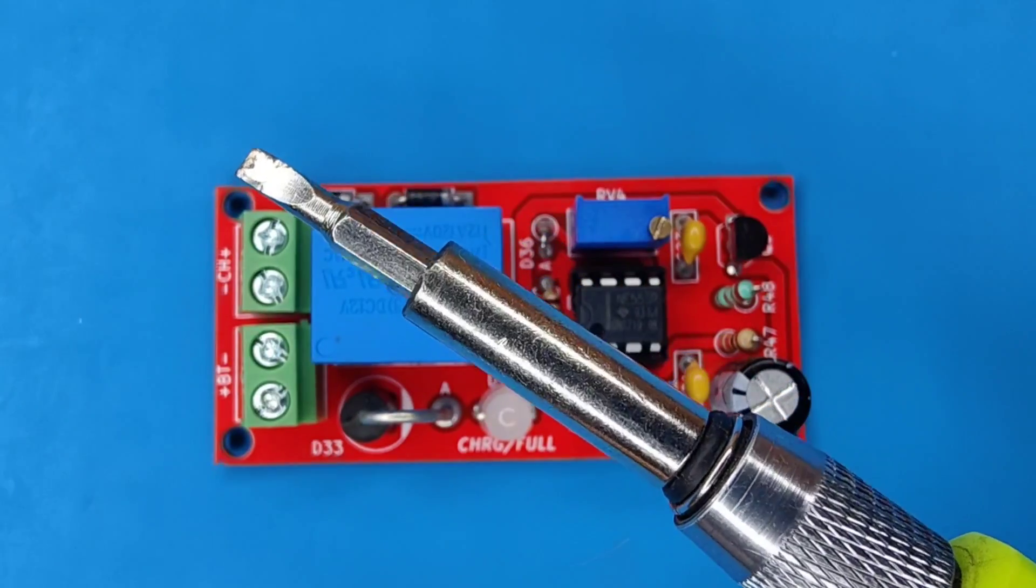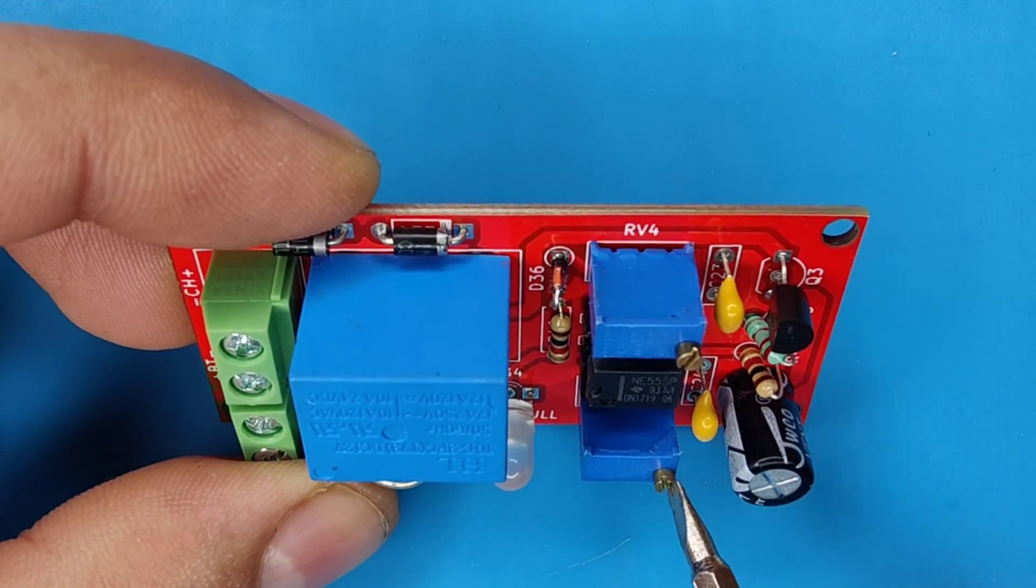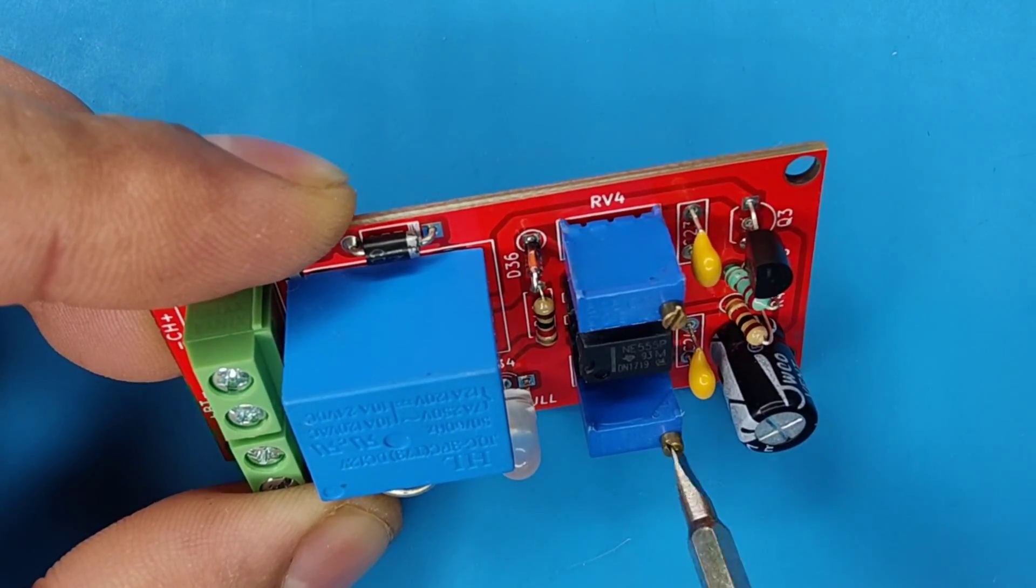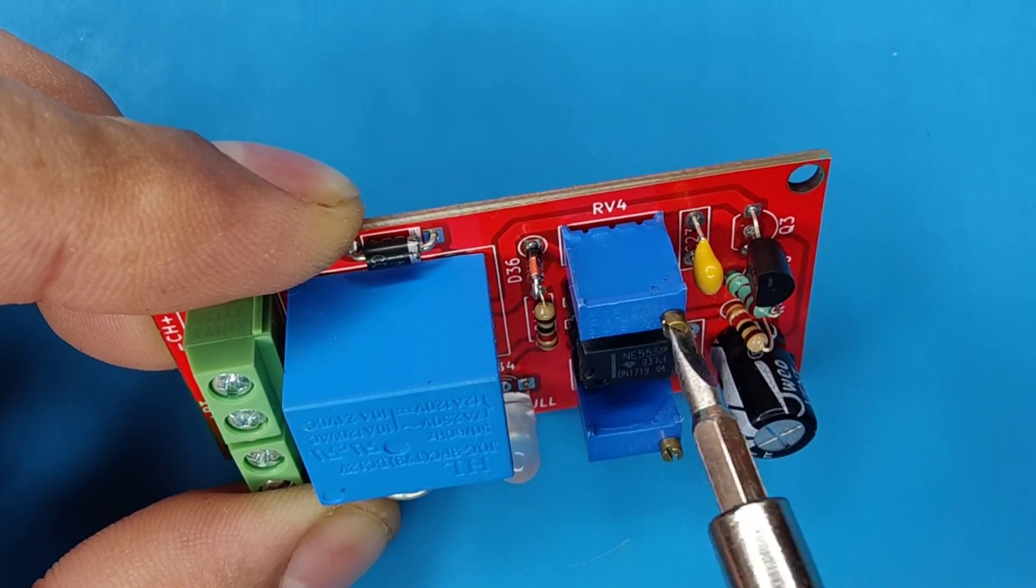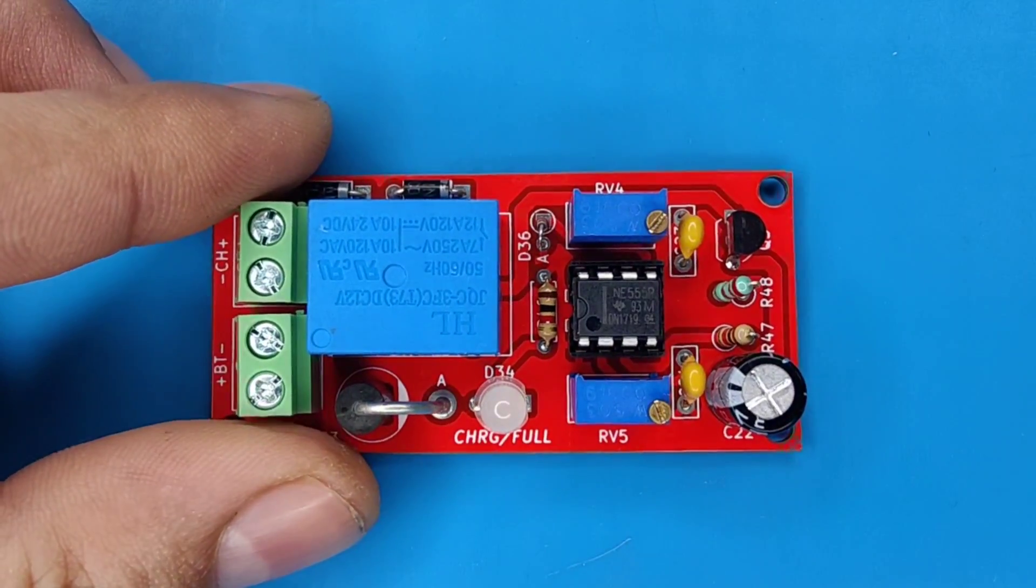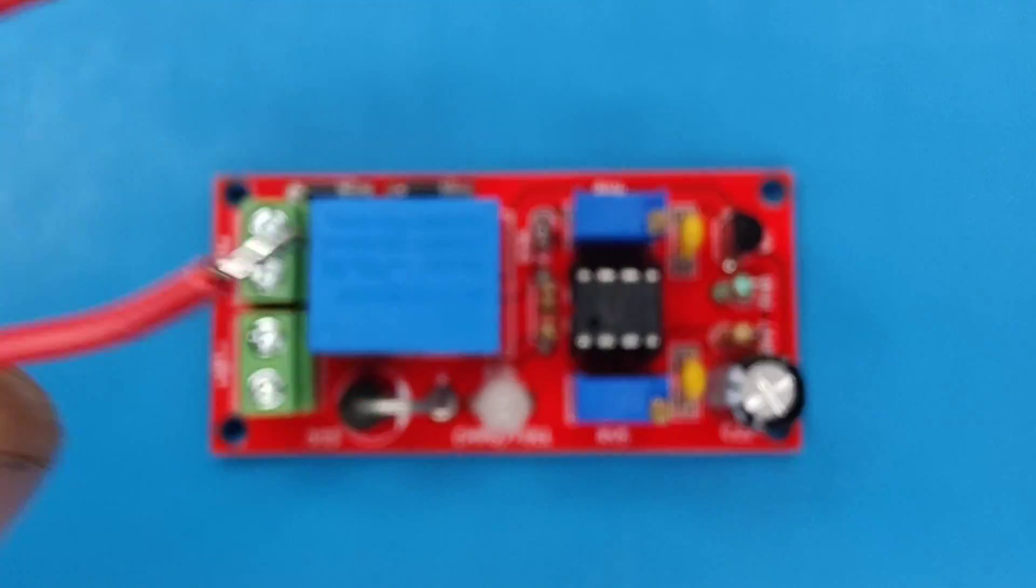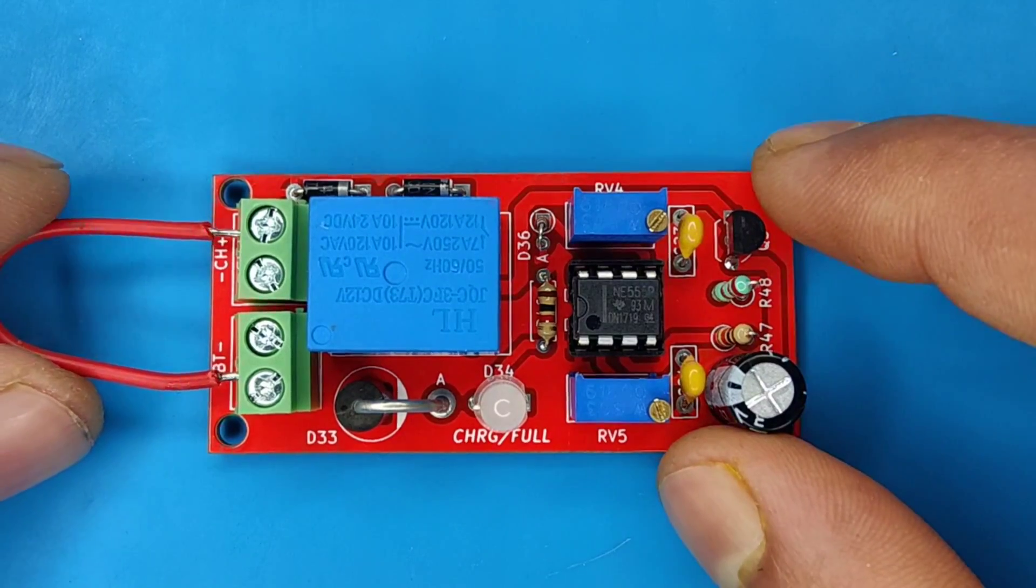Now it's time to calibrate the circuit. Before you calibrate, make sure the lower potentiometer is set to minimum and the upper potentiometer is set to maximum. Now using a piece of wire, connect both input and output positives.